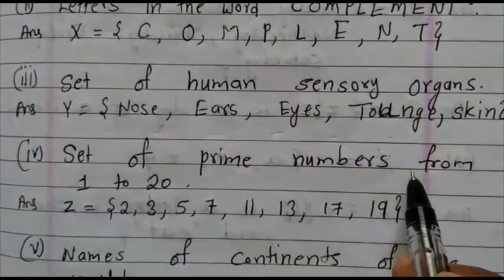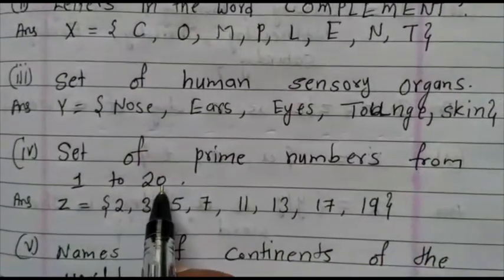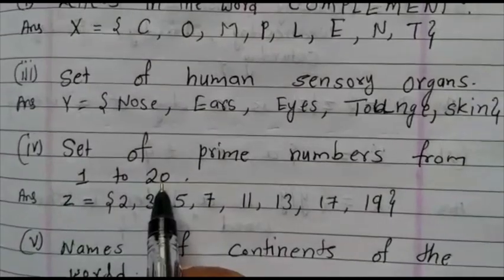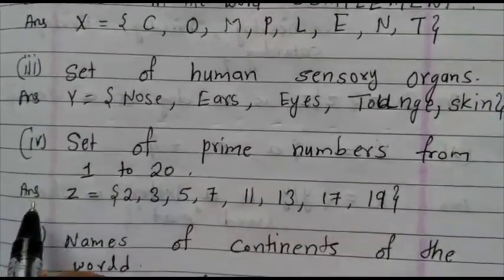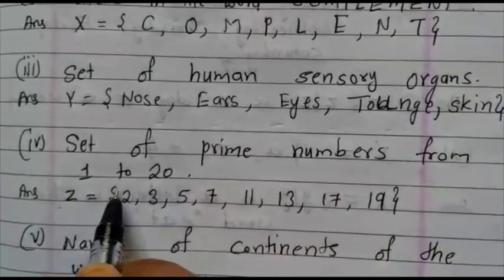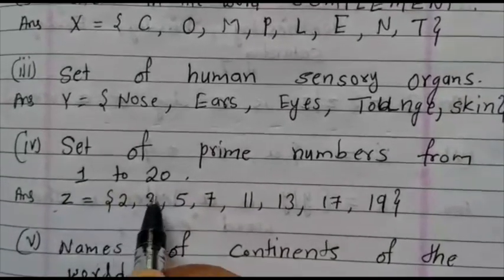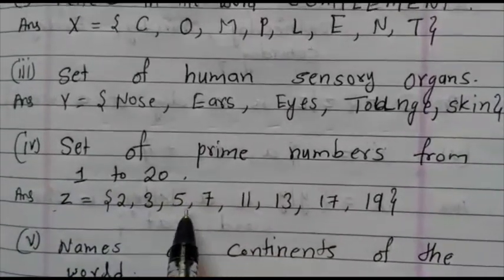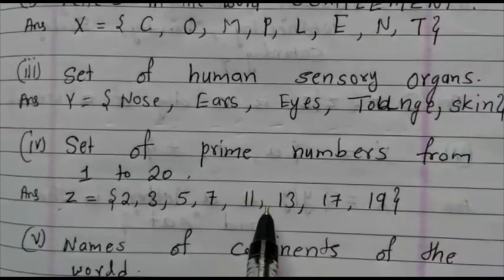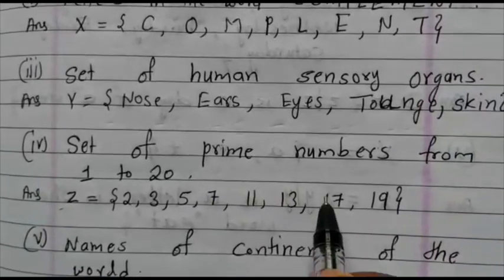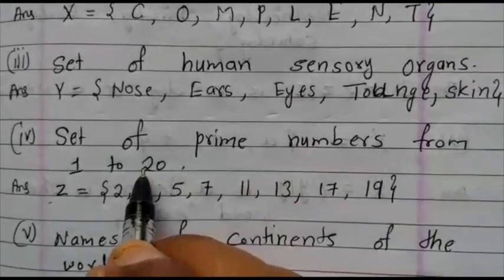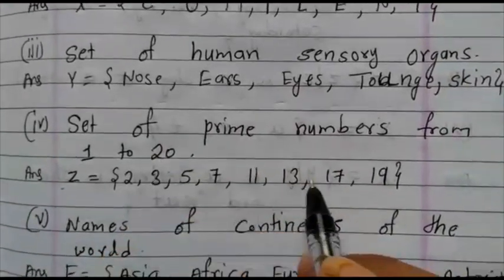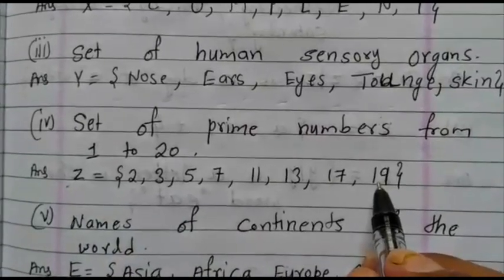Fourth, set of prime numbers from 1 to 20. We know which one is the prime number, the number with only itself as a factor. How to write? Z equals curly bracket 2, comma, 3, comma, 5, comma, 7, comma, 11, comma, 13, comma, 17, comma, 19. Till here is given 20, so we write till 19.